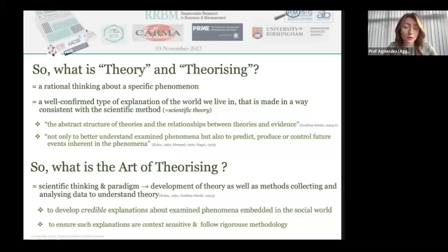Based on that, we could say that the art of theorizing involves the following: developing credible explanations about the examined phenomenon, while ensuring that such explanations are context sensitive due to the diverse national contexts in which the examined phenomenon is embedded, and following a rigorous scientific method which, in the context of responsible research, allows for replication.